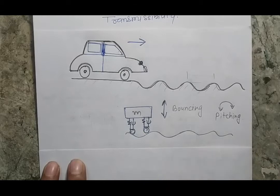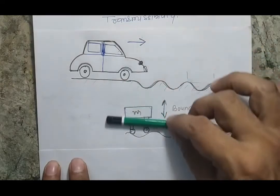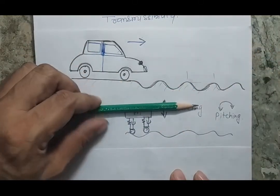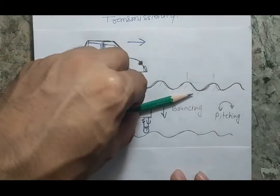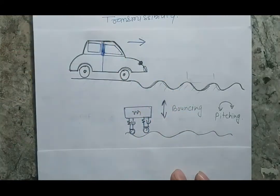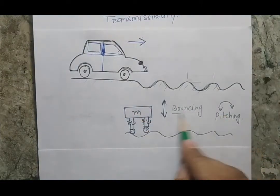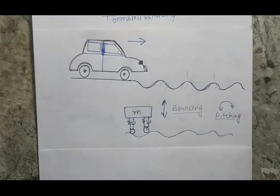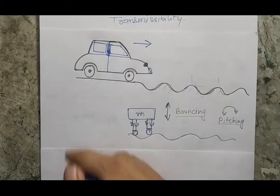Physically, there will be two types of response. One is the complete up and down motion, which we call bouncing motion. The other is rotation about a point, which we call pitching motion. So the system will have both pitching and bouncing motion, and since these two are independent motions, the system falls under the category of a two degree of freedom system.